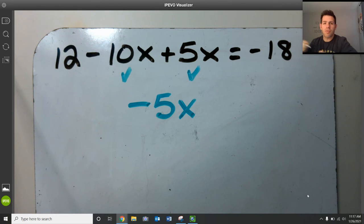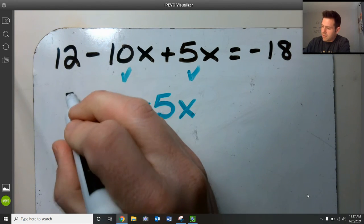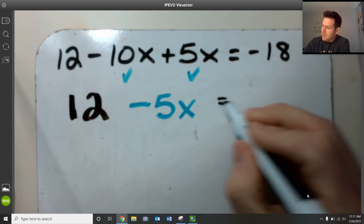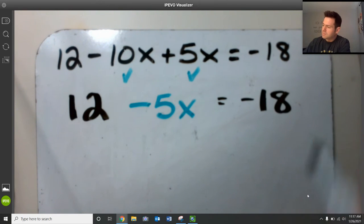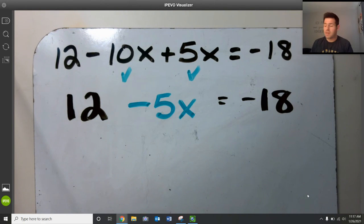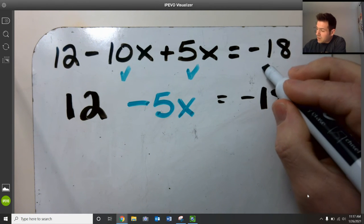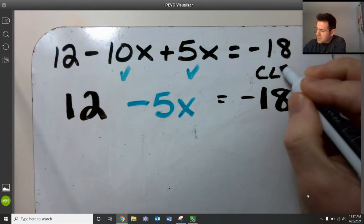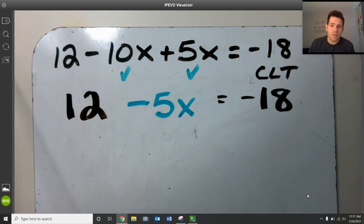And the rest of the problem is just going to drop down. So I haven't touched the 12 yet. I haven't touched the negative 18 yet. And when it comes to the step that I just achieved, remember that was me doing combining like terms. We'll go ahead and abbreviate it CLT for short, combining like terms.